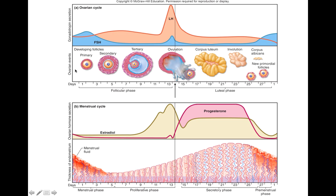In addition to the events happening in the ovaries, you also have events happening in the uterus — the uterine cycle, pictured down here on the bottom row. The uterine cycle lines up well with the ovarian cycle so that the uterus is ready in case there is a fertilized egg.